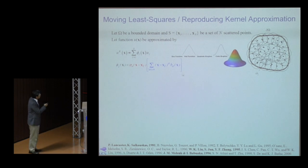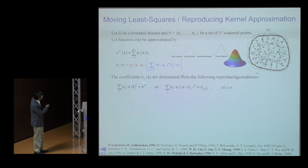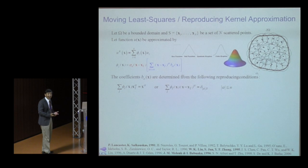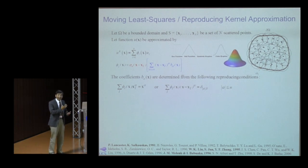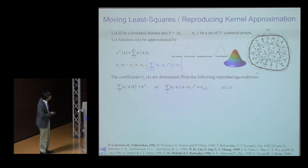The coefficients b are obtained by enforcing this approximation to exactly reproduce polynomials from zeroth to nth order — this is where completeness up to nth order is imposed. With stability and completeness, you get consistency of convergence, relating this approach to the order of convergence in the numerical PDE.